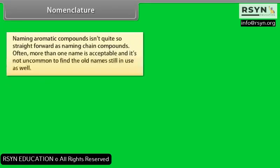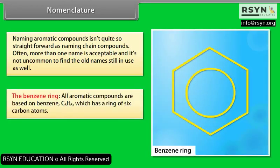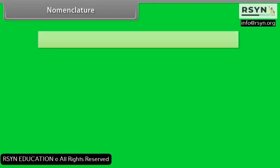Nomenclature. Naming aromatic compounds isn't quite so straightforward as naming chain compounds. Often more than one name is acceptable, and it's not uncommon to find the old names still in use. The benzene ring: all aromatic compounds are based on benzene, C₆H₆, which has a ring of six carbon atoms and this symbol. Each corner of the hexagon has a carbon atom with a hydrogen attached.